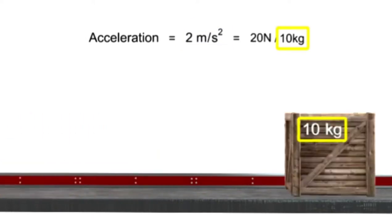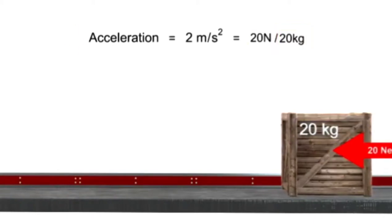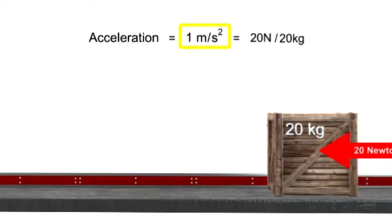If the mass of the box is increased to 20, but the force stays the same, the acceleration will decrease in inverse proportion to 1 meter per second squared.